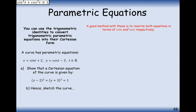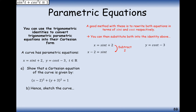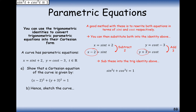A good method with these is to rewrite both equations in terms of sin(t) and cos(t) respectively. You can then substitute both into the identity sin²t + cos²t = 1. Take the first one: x = sin(t) + 2. Subtract 2 from both sides: x − 2 = sin(t). Take the other equation: y = cos(t) − 3, add 3 to both sides: y + 3 = cos(t). Then replace sin(t) with (x−2) and cos(t) with (y+3) in the identity, squaring them to get (x−2)² + (y+3)² = 1.